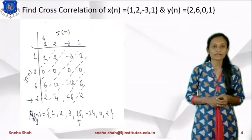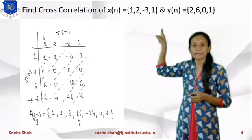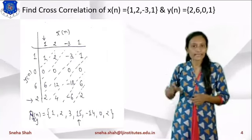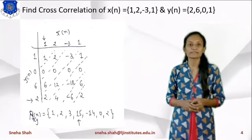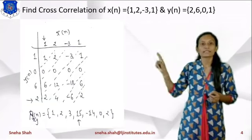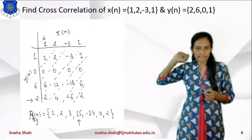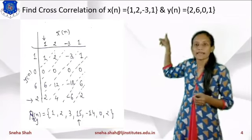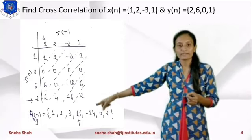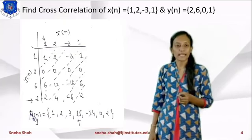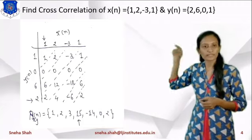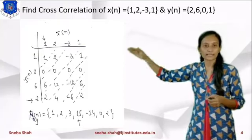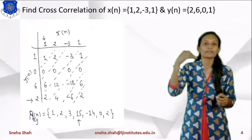The next example is: find the cross-correlation of x(n) = {1, -3, 1} and y(n) = {2, 6, 1}. You can see that in this example no arrow is given, so we will use the first term as the arrow position. I write x(n) as-is: {1, -3, 1} with arrow below the first term. Then y(n) will be folded. After folding, it will be represented as {1, 0, 6, 2}, with the arrow below the 2.